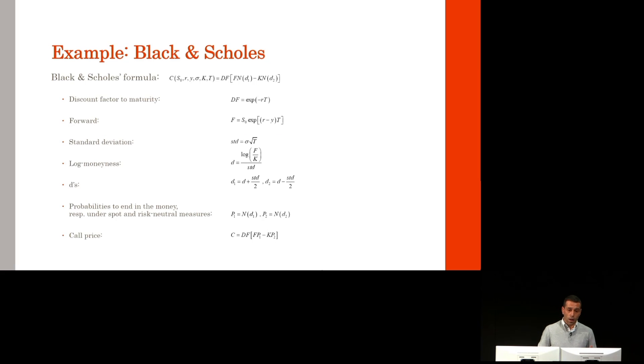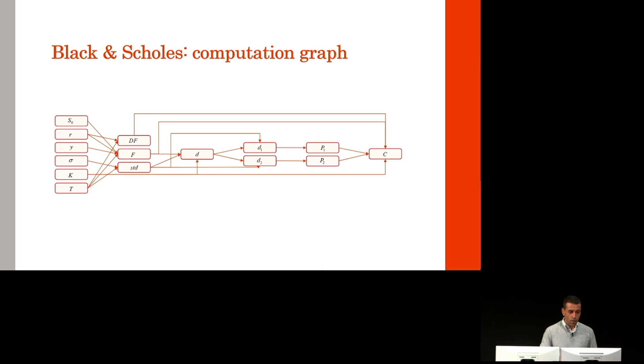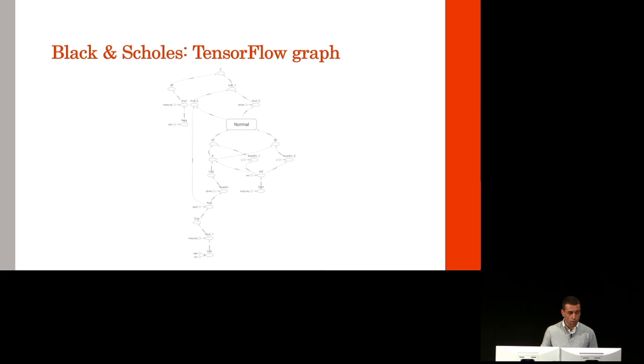This is called the computation graph. Consider a simple example, Black-Scholes. This is the formula together with the steps to compute it. This is a possible implementation in code in C++ or TensorFlow. And this is the computation graph where you see the steps of how you get from the inputs on the left to the result on the right.